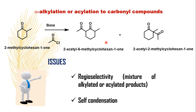So, a mixture of products is generally observed by the treatment of carbonyl compounds with a base during alpha-alkylation or acylation. The issues we face in this process are: non-regioselective reactions — you observe a mixture of alkylated or acylated products — and when using a base, there is also the possibility of self-condensation.